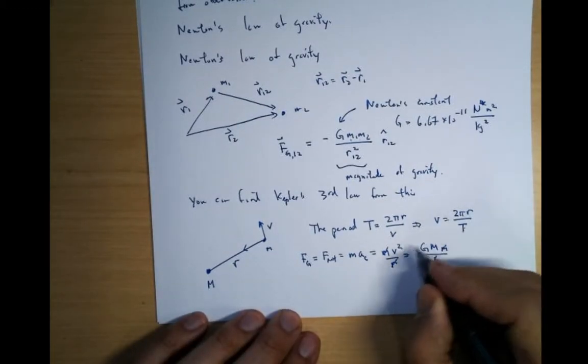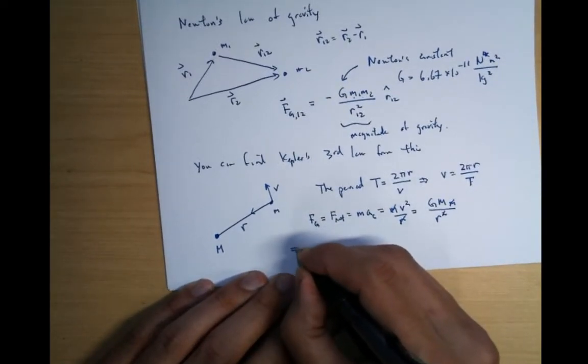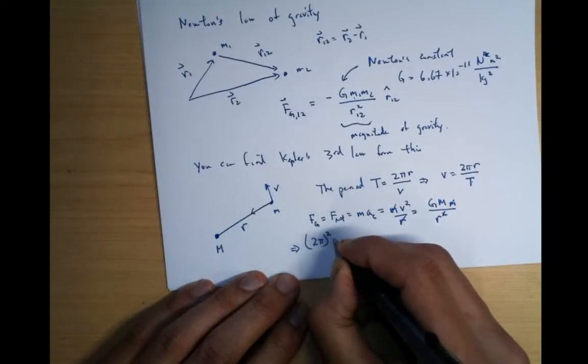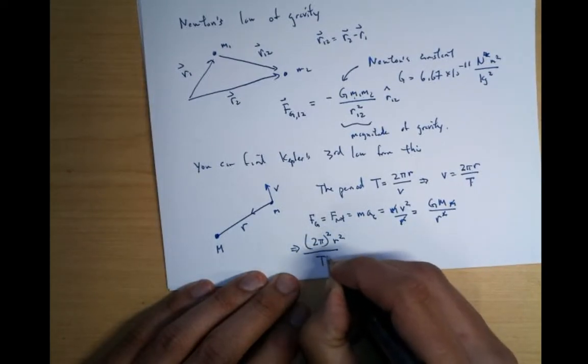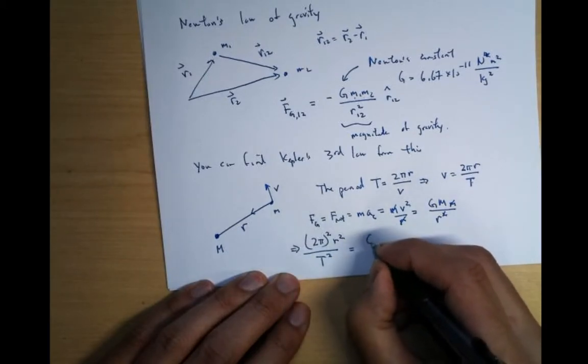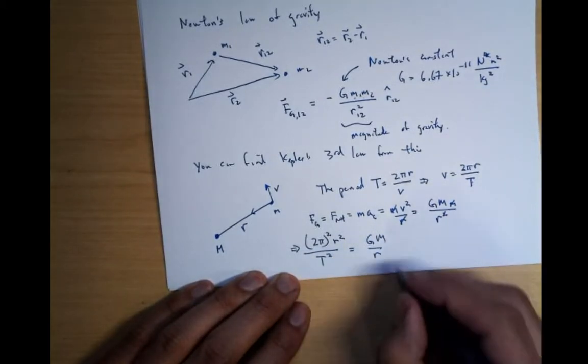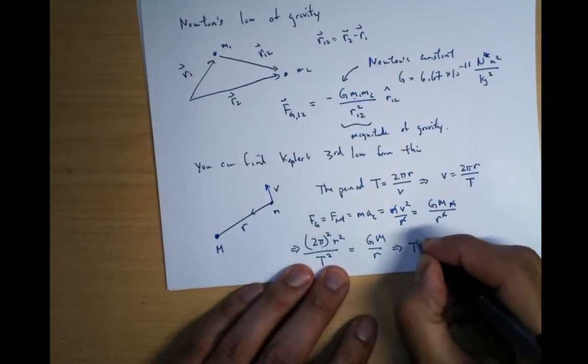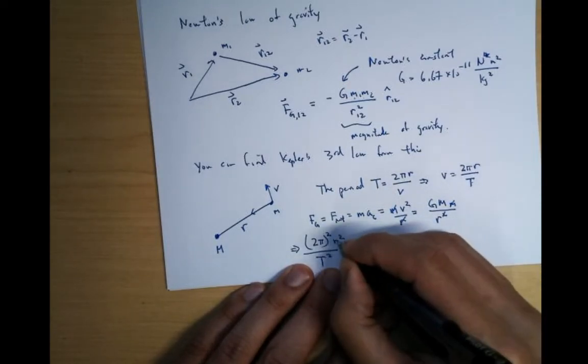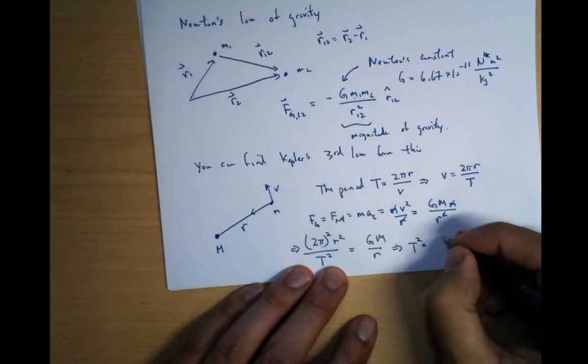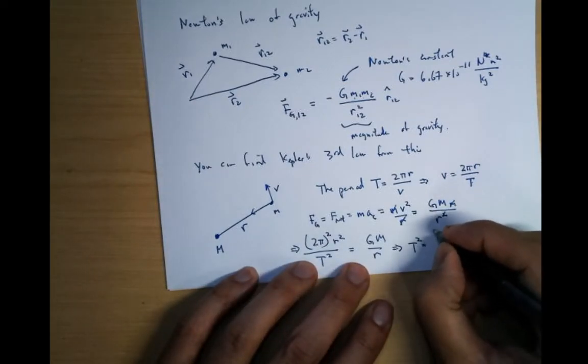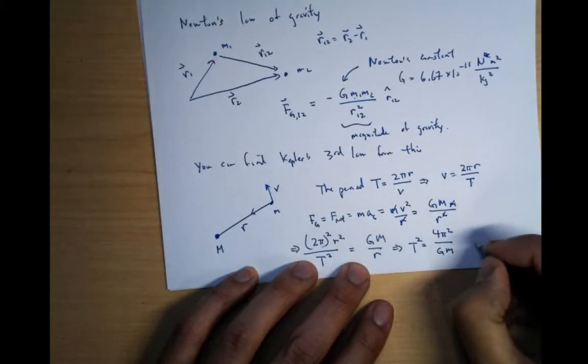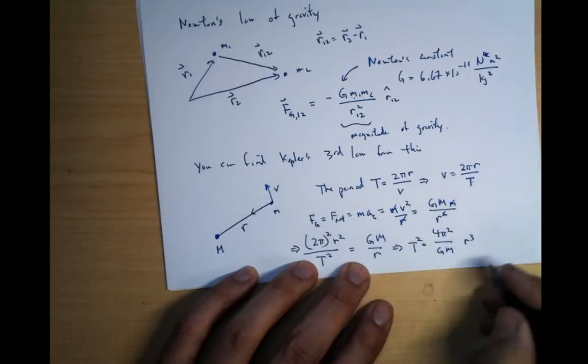And so we plug in the velocity here, we get something that looks like this: 2 pi squared r squared over t squared is equal to g M over r. And so you mix and match this thing. You get T squared equals, bring this over the side, bring these things over that side. It's going to be some constants out here, 4 pi squared over g M, and then r cubed.